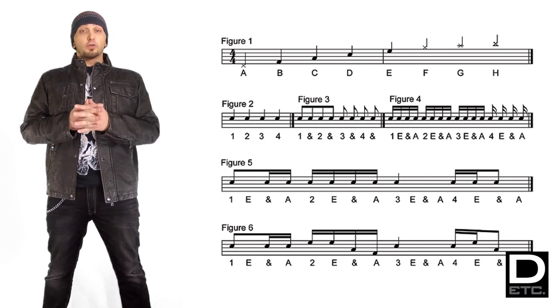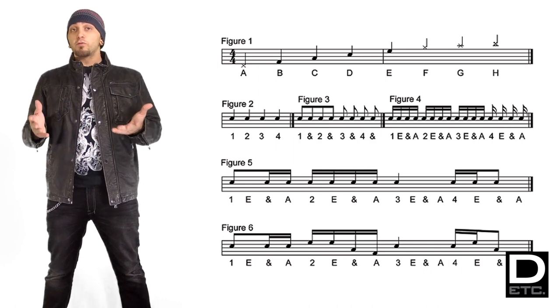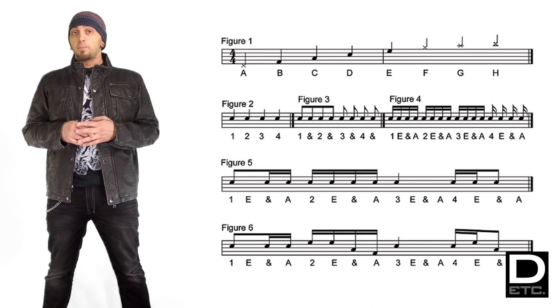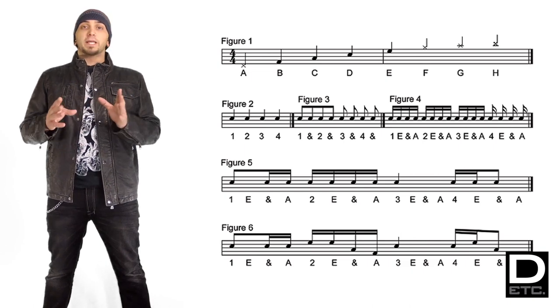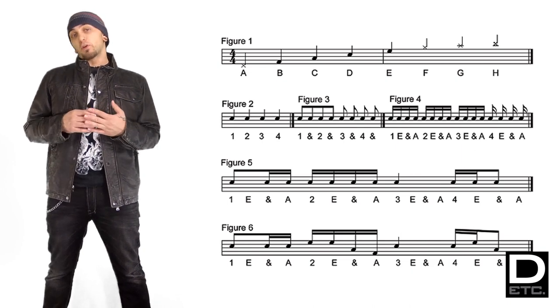The first note we're going to talk about is called the quarter note. As you may have guessed, a quarter note is obviously a quarter of the bar, which means there's four of them per bar. Remember I said we were going to count 1, 2, 3, 4 for each of these bars? That's right. The quarter note lines up exactly with our count.